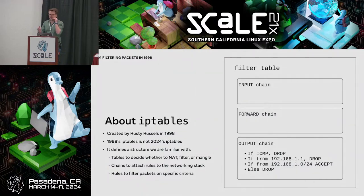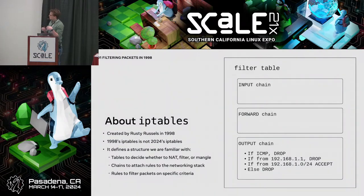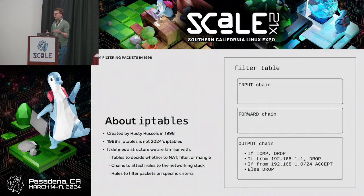A syscall is a way for a user space program to communicate with the kernel and have the kernel perform a privileged task. So IP tables — the binary running in user space — will call a kernel function, which is getsockopt or setsockopt, to perform something on the kernel side.